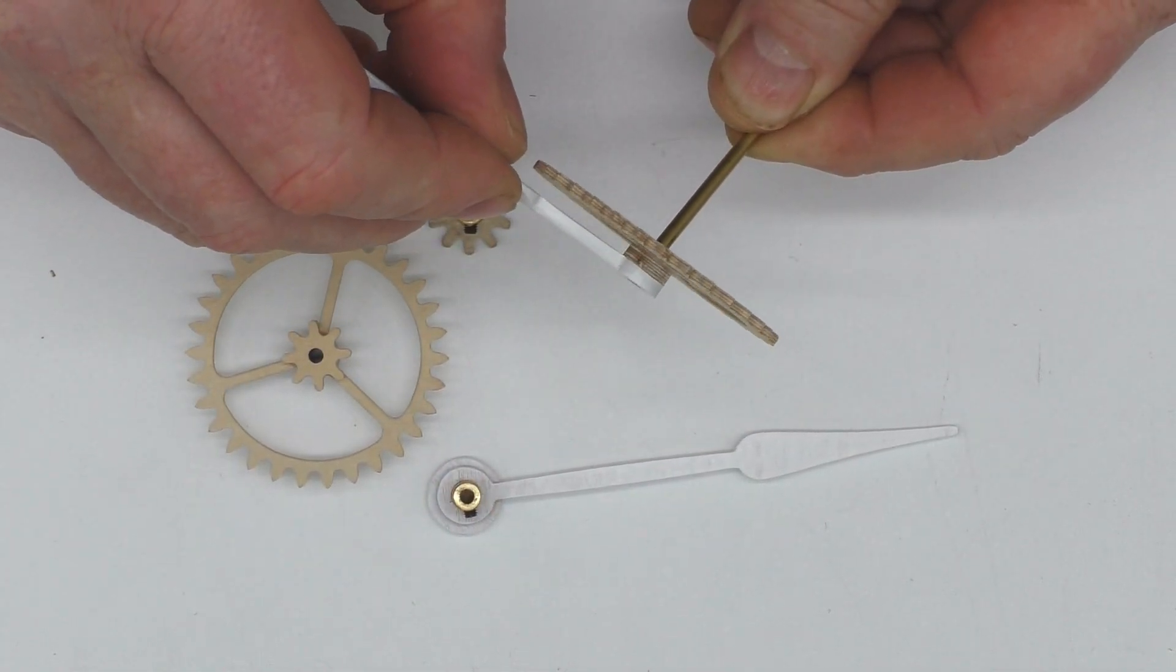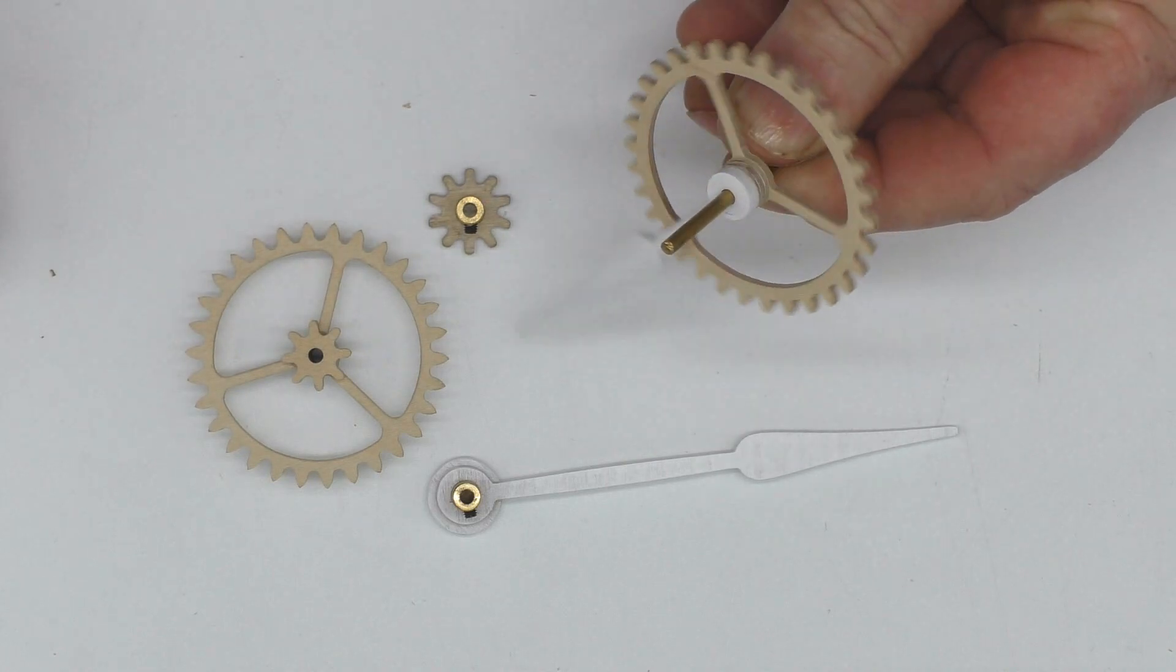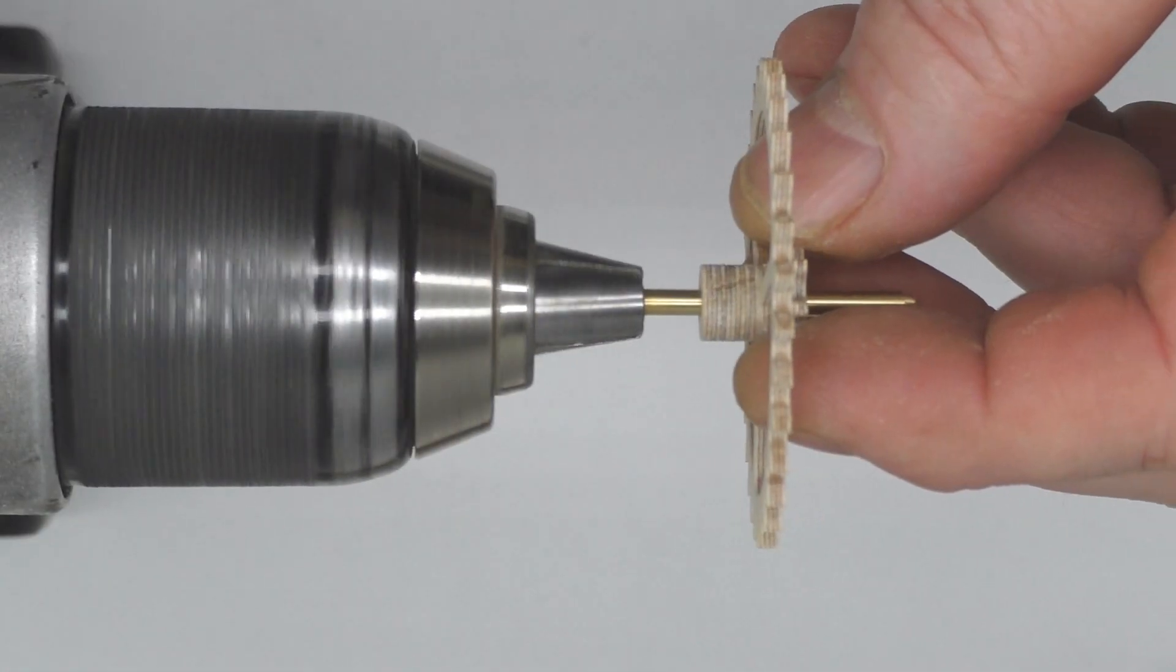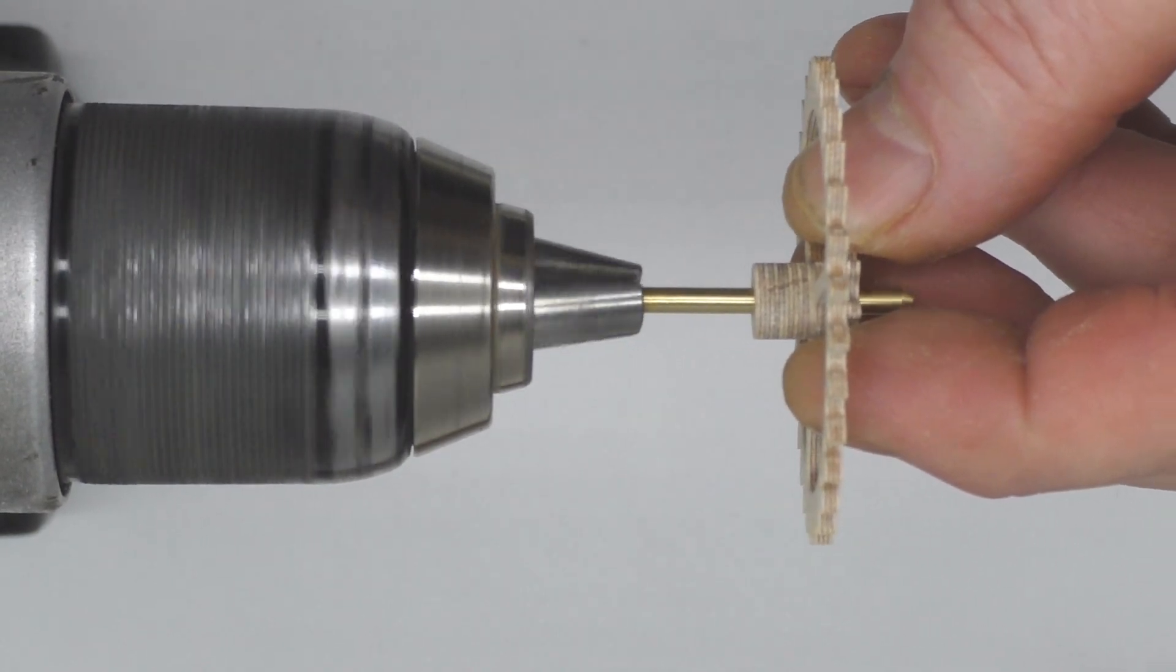The cog and pinion assembly as well as the hour hand and cog must turn very easily on the arbor. If this is not the case, you can use a piece of arbor to widen the hole.